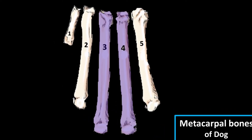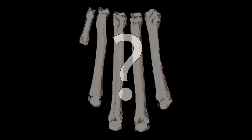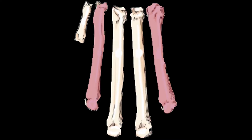If you observe, the third and fourth metacarpal bones are basically four-sided, while the second and fifth are three-sided. This is the main identification point to differentiate these bones.